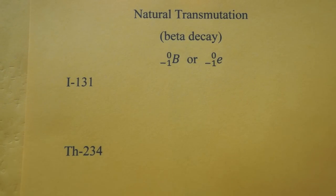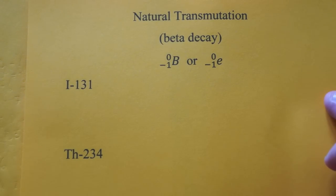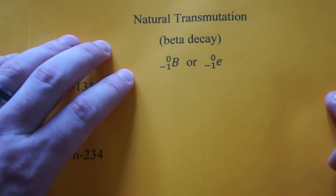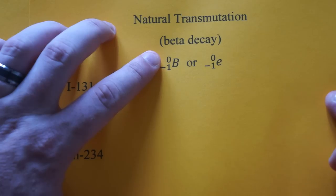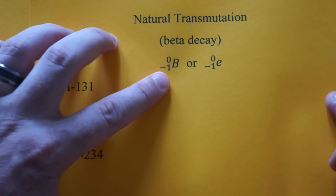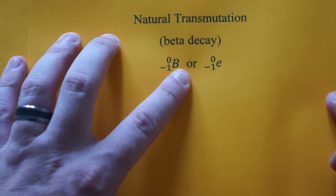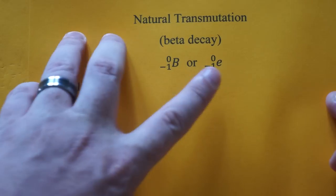This video is going to show you the natural transmutation equations for beta decay. A beta particle is a high-energy electron. It has a mass of pretty much zero because it's an electron, and it has a charge of minus one. So you're either going to write it with the symbol B, or it could be an E, because it is an electron.